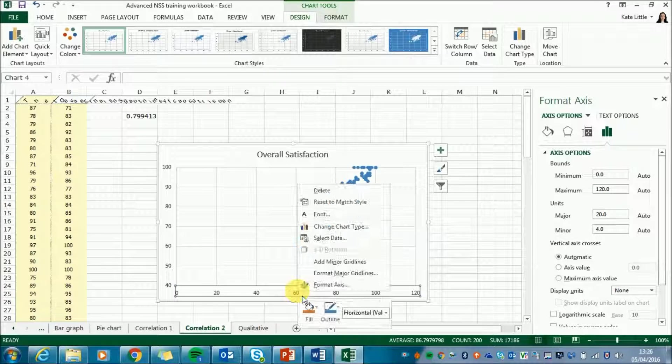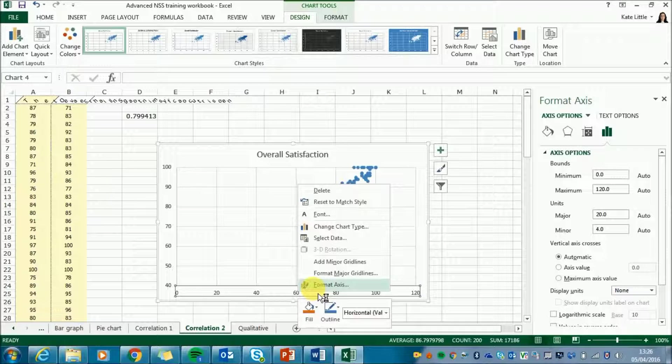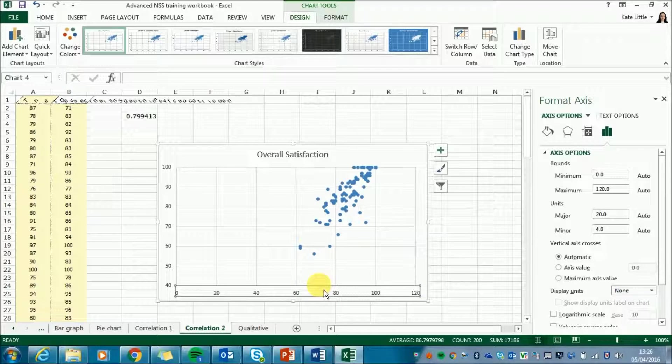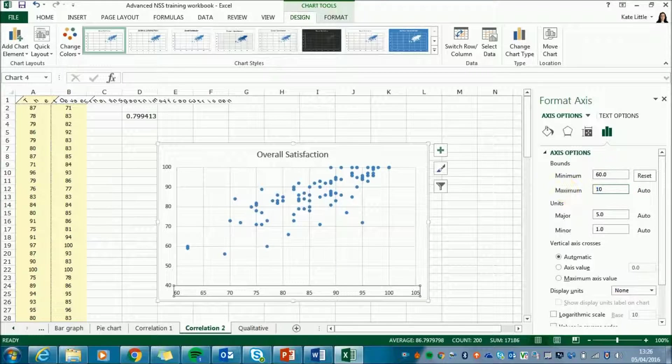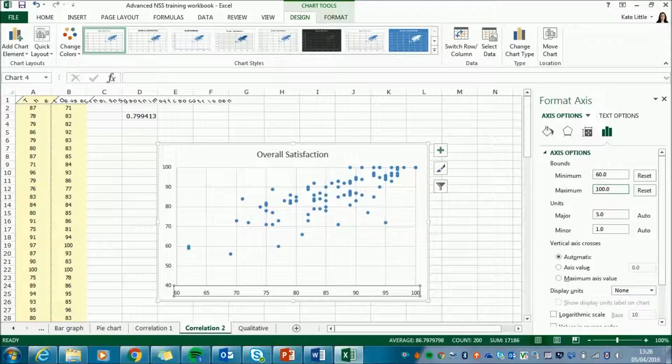And then do the same on the horizontal axis. So right-click and Format Axis and change the minimum. There's nothing below 60. So change it to 60 and again to 100. There we go. So that's a much clearer graph so you can see the correlation a lot more clearly.